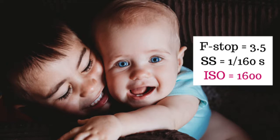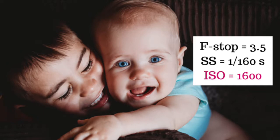In this next picture, similar situation: we were indoors and the subjects were moving, so I had to have a fairly fast shutter speed. I bumped down my aperture, but not too low because I was taking pictures of two people and I didn't want one to be blurry. I had to bump my ISO up to 1600 to get this shot. The only way to really understand your camera settings is to get out there and practice.